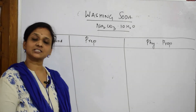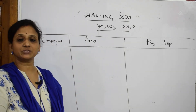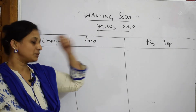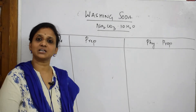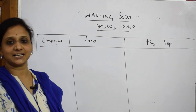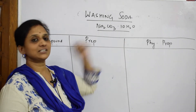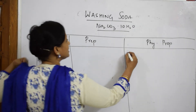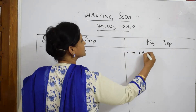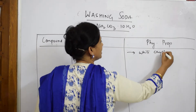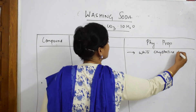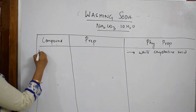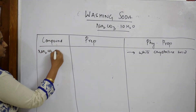Let's study the next compound of sodium — sodium carbonate, also known as washing soda. The formula is Na₂CO₃·10H₂O, that is decahydrate. The 10H₂O represents the water of crystallization. Sodium carbonate is a white crystalline solid.